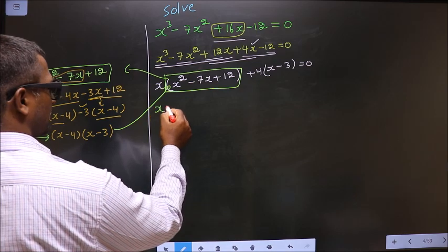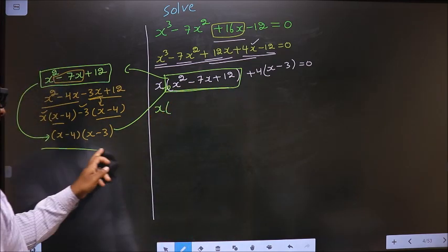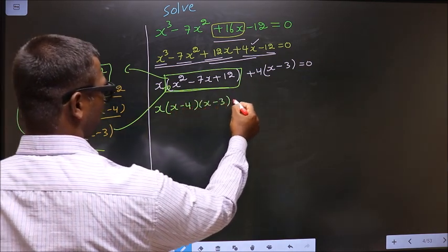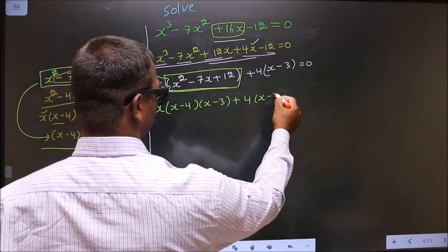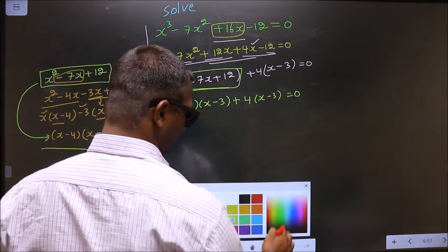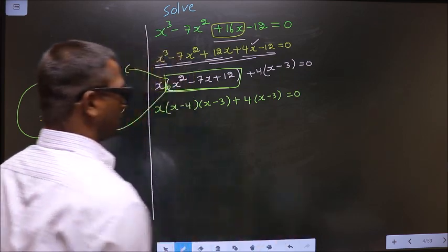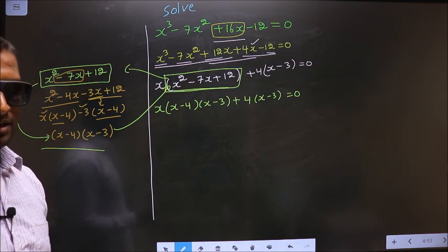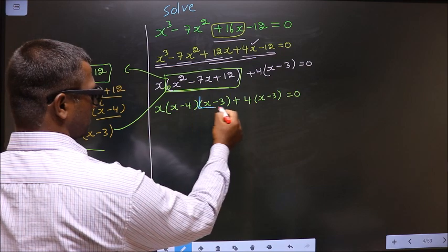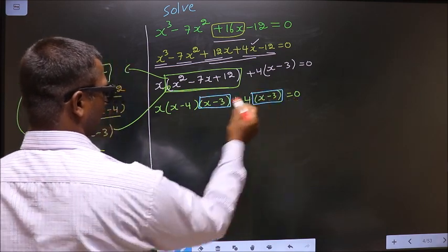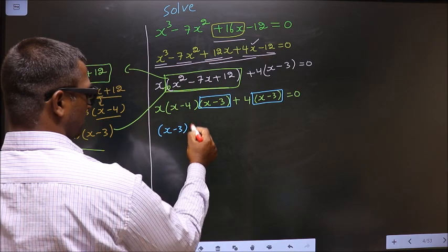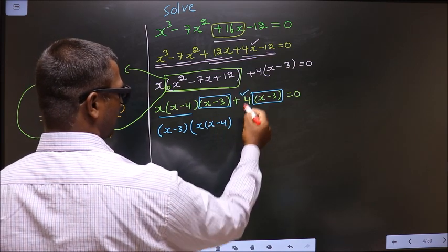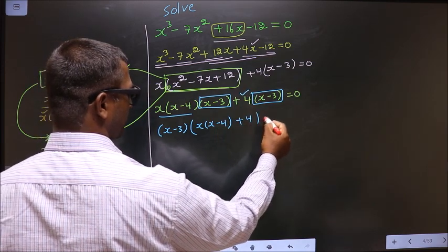So this is x times — in place of this quadratic, now this: x minus 4, x minus 3, plus 4, x minus 3 equal to 0. Now, from this entire equation, what you can take out common is x minus 3. So you have here x times x minus 4 and here plus 4, equal to 0.